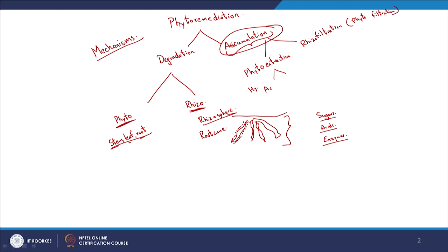In phytoextraction, you have accumulators or hyper-accumulators. Some plants have a great affinity for particular compounds, typically a few heavy metals. Some plants take up heavy metals at concentrations almost 100 to 1000 times more than other plants for those same contaminants. The reason is not entirely clear but is likely related to reduced effects of toxicity in the relevant zone.